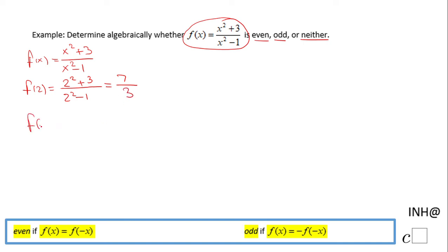Similarly, we're going to do f(-2), and that will be (-2)² + 3 over (-2)² - 1. The quantity (-2)² is 4 + 3, becomes 7. Similarly for the denominator, (-2)² is 4 - 1 is 3. You notice these two are the same: f(2) equals f(-2), so this statement looks similar with this one. We're going to say the function is even.